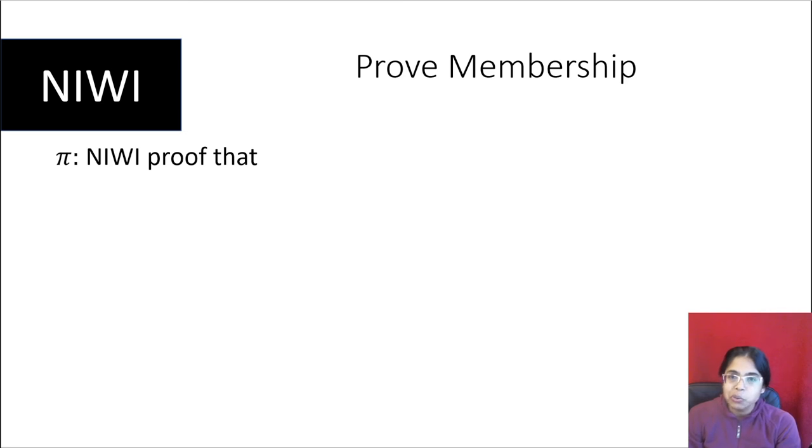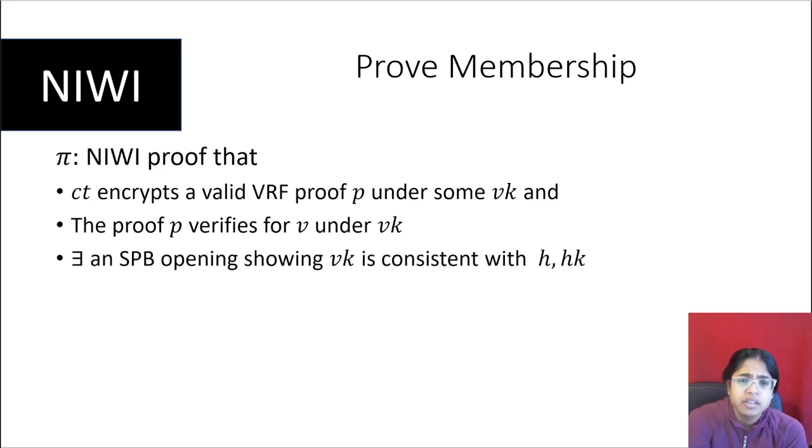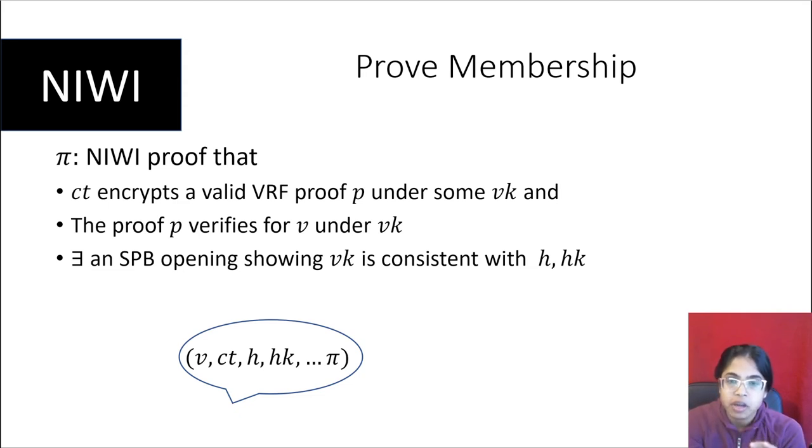Now you can't just use any old verification key. You do have to prove membership in the ring. So the NIWI is a NIWI proof that the ciphertext encrypts a valid VRF proof under some verification key in the ring and the proof verifies for that value under the VK. And then finally, we need to show that there exists an SPB opening showing that that VK is consistent with H and HK. So our signature so far looks like this: V, CT, H, and HK. None of this reveals the signer and the membership proof with the SPB opening shows that that verification key must be in the ring. So we're almost there, but this is not quite enough.